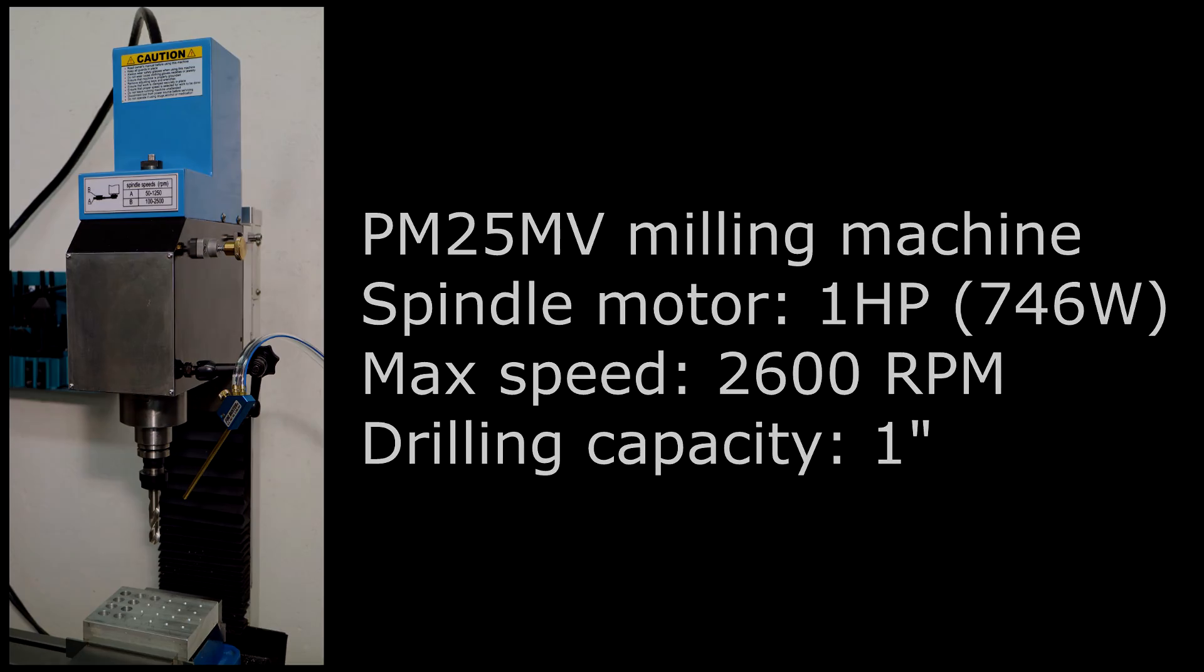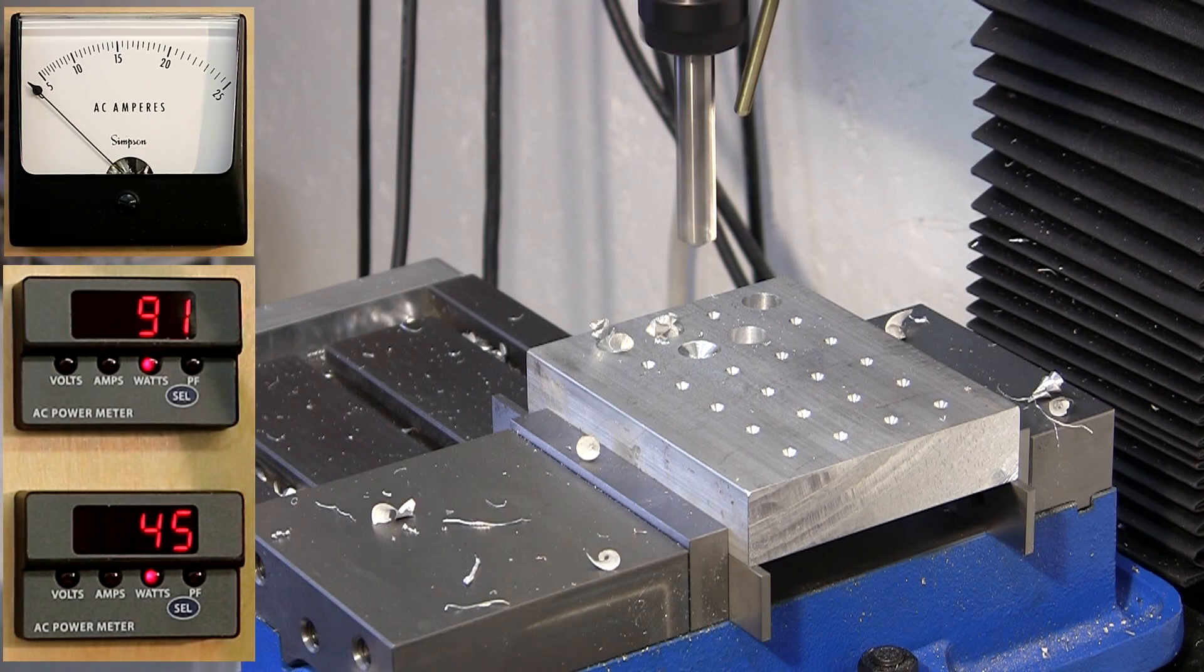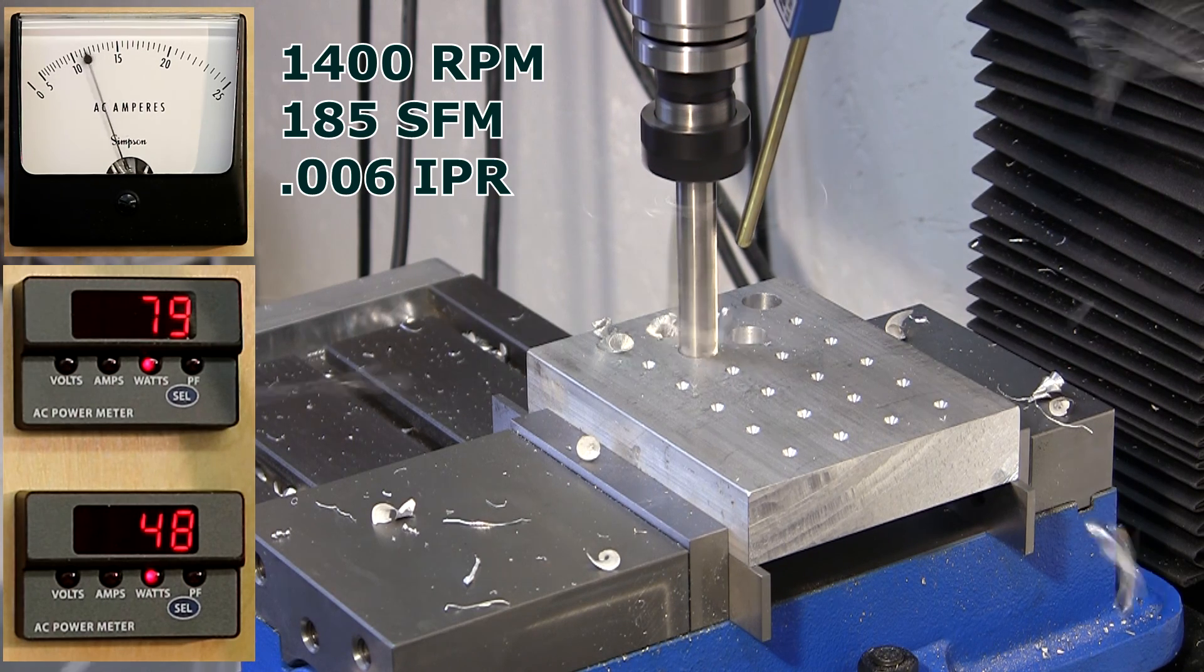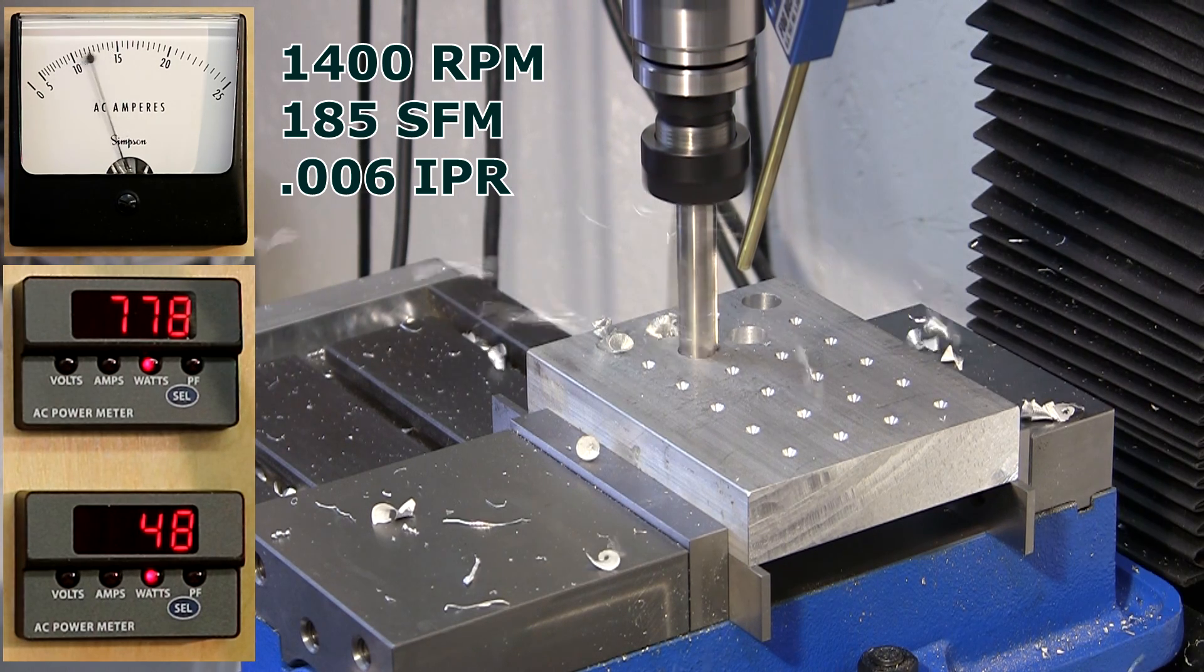In some CNC mills, the drilling capacity is not limited by the spindle, but instead by the thrust capacity of the axis motor. With this CNC mill, horsepower delivered to the spindle is the limiting factor.